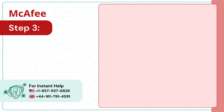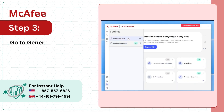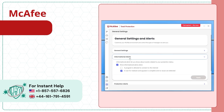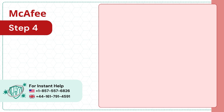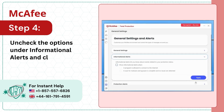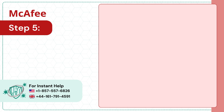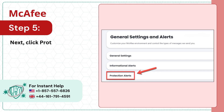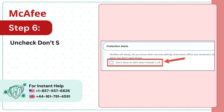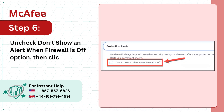Step 3: Go to General Settings and click Informational Alerts. Step 4: Uncheck the options under Informational Alerts and click Apply. Step 5: Next, click Protection Alerts. Step 6: Uncheck the 'Don't Show an Alert when Firewall is Off' option, then click Apply.